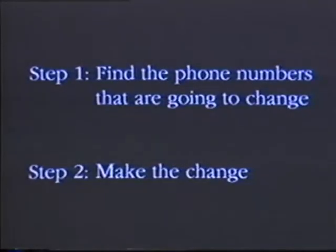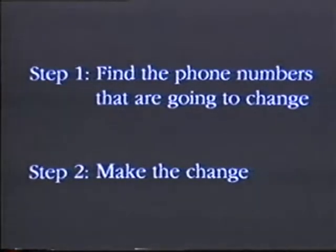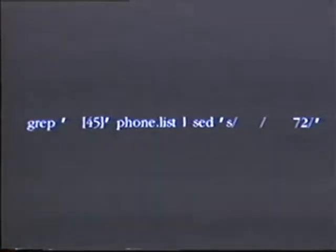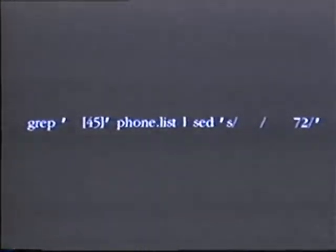This is a two-step process. First, you need to find those phone numbers that are going to change, and then you have to make the change in the phone number. This pipeline does that. The grep command will find those phone numbers that begin with a four or a five, and the sed command will put a 72 in front of those numbers, which is the prefix that you need to add.